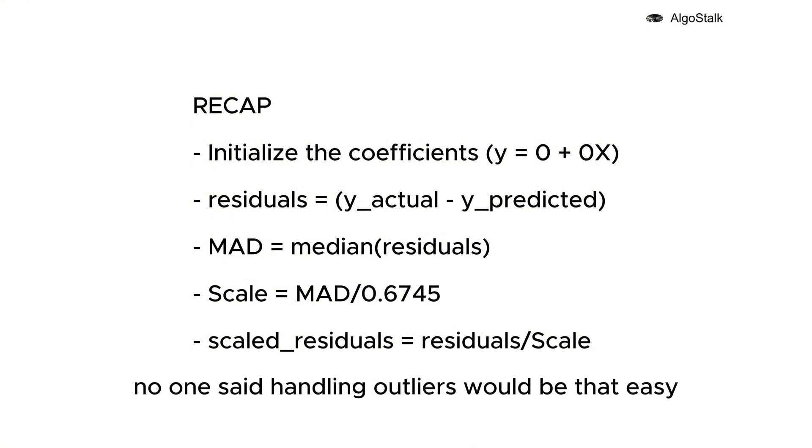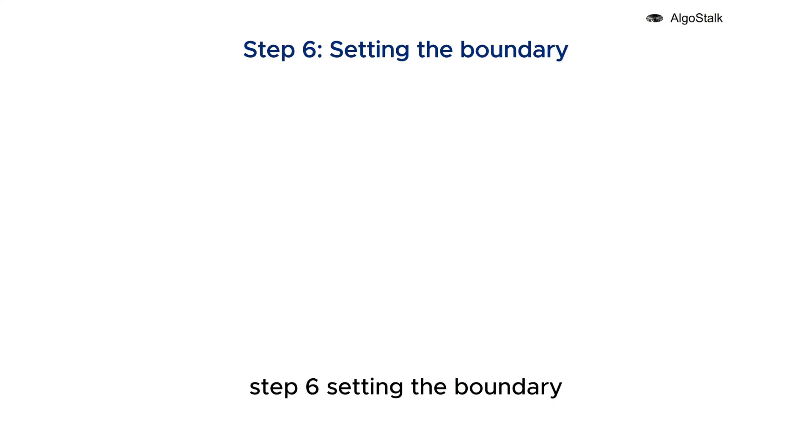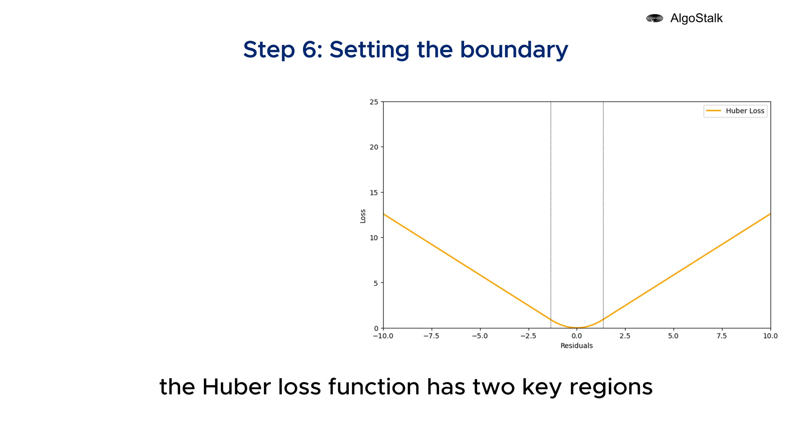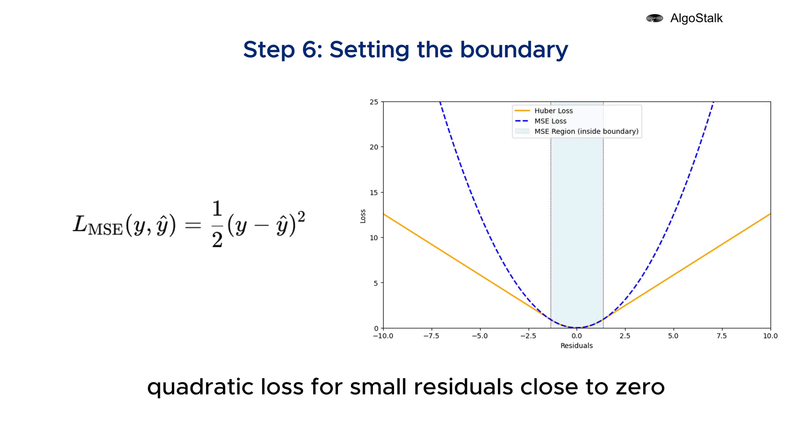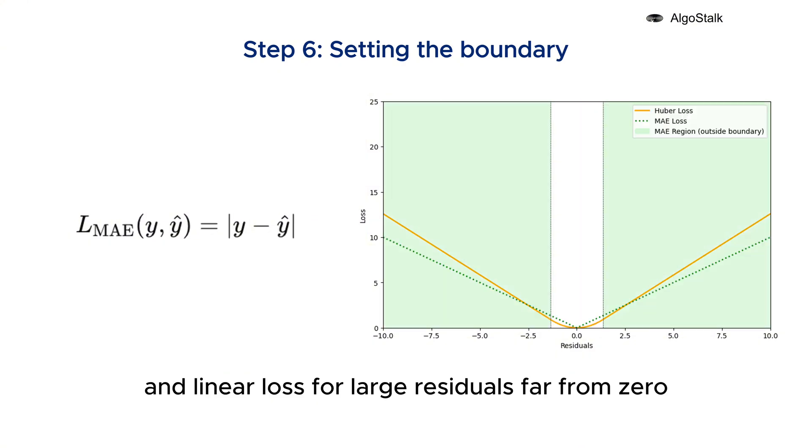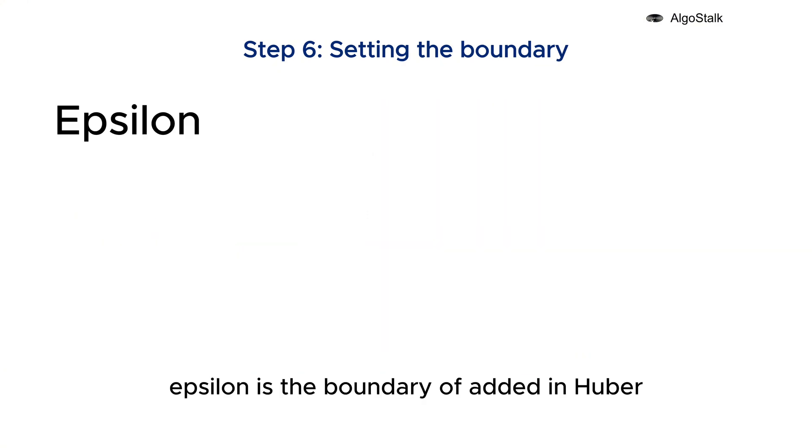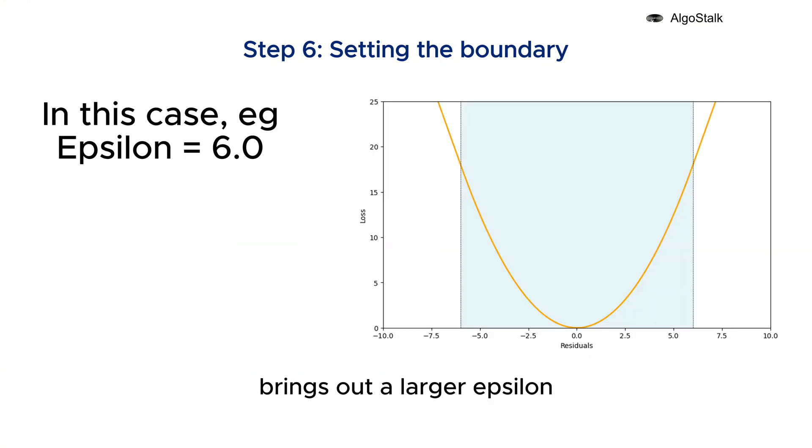Step six: setting the boundary. The Huber loss function has two key regions: quadratic loss for small residuals close to zero, which behaves like mean squared error, and linear loss for large residuals far from zero, which behaves like mean absolute error. This allows Huber regression to be less sensitive to outliers, improving model robustness. Epsilon is the boundary, and in Huber it brings out a larger epsilon makes the model behave more like a linear regression sensitive to outliers, while a smaller epsilon makes it more robust like MAE.